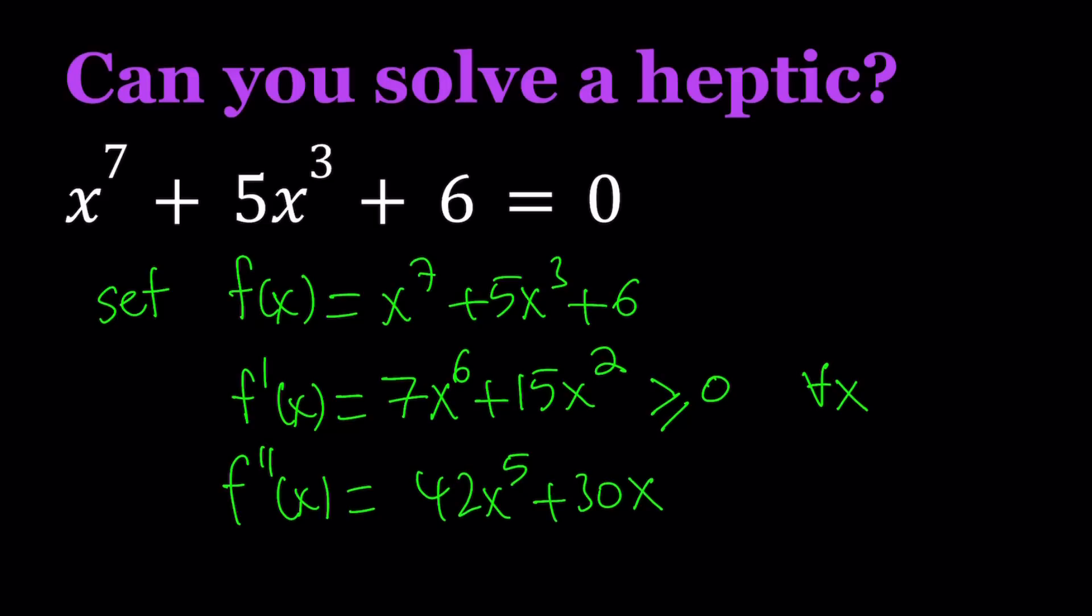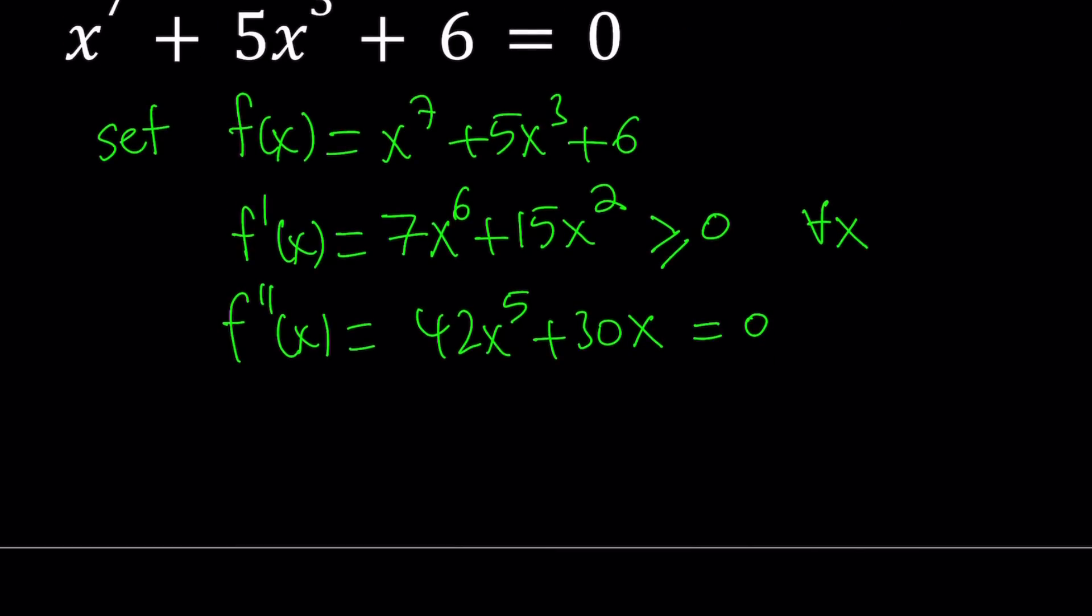Now, we can go ahead and set it equal to 0 to find the critical points. And from here, of course, we could do the same thing with the first derivative, and we would get 0 as well and some other roots. With this one, we can take out a 6x, and inside we would have 7x to the 4th power plus 5. Now, when you set it equal to 0, 7x to the 4th power plus 5 is always positive, therefore, it cannot equal 0. From here, we only get one solution. A root of the second derivative is going to be x equals 0.